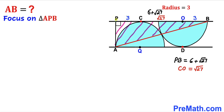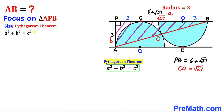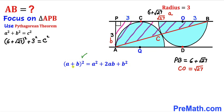Let's focus on right triangle APB once again. Side length PB is 6 + √27, and AP is the radius of the semicircle, so it is three units. Now we are going to apply the Pythagorean theorem to calculate side length AB: A² + B² = C². The longest leg is C (which is AB), leg A is 6 + √27, and leg B is 3.